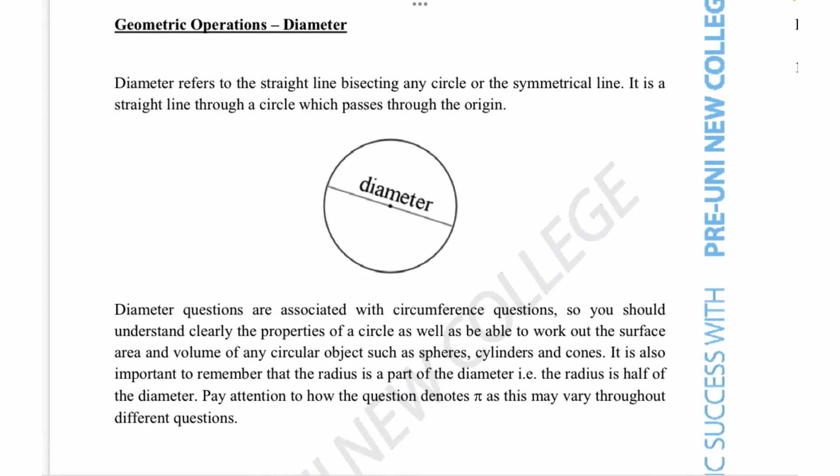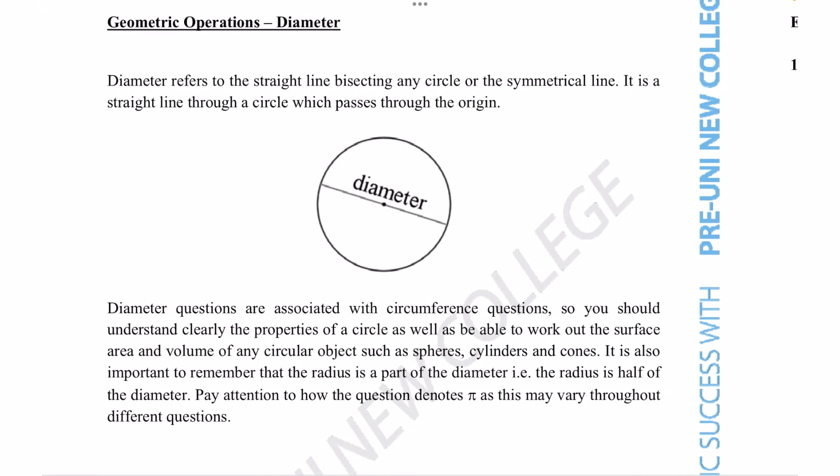Let's begin by reading a short description of what we can expect in diameter related questions. Diameter refers to the straight line bisecting any circle or the symmetrical line. It is a straight line through the circle which passes through the origin.